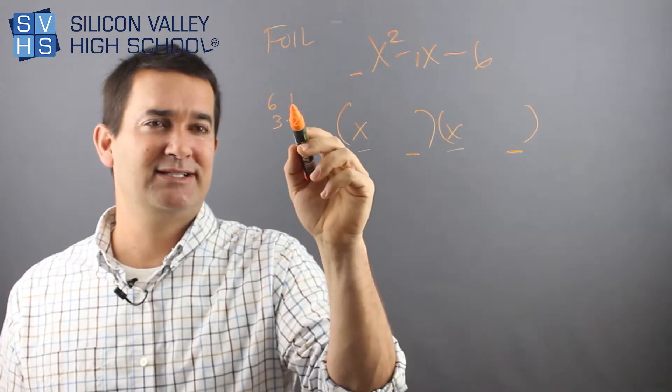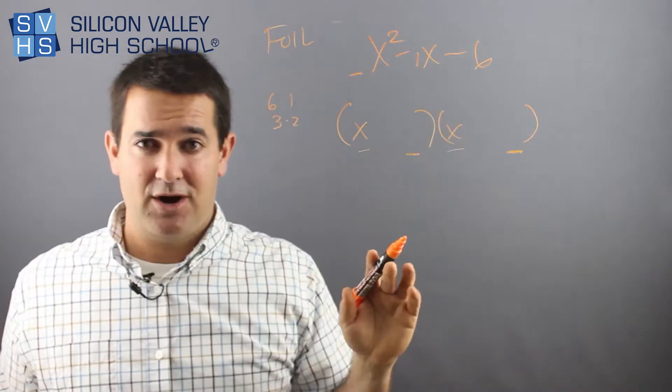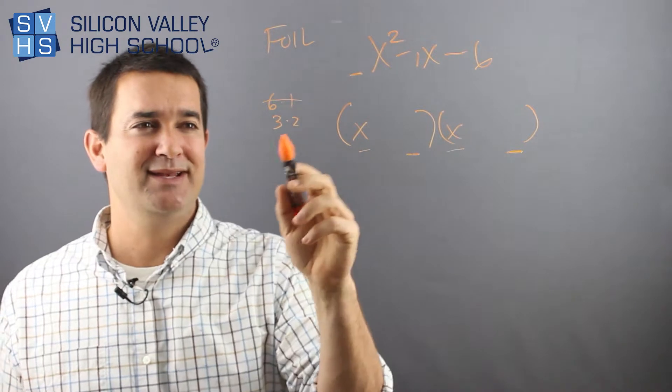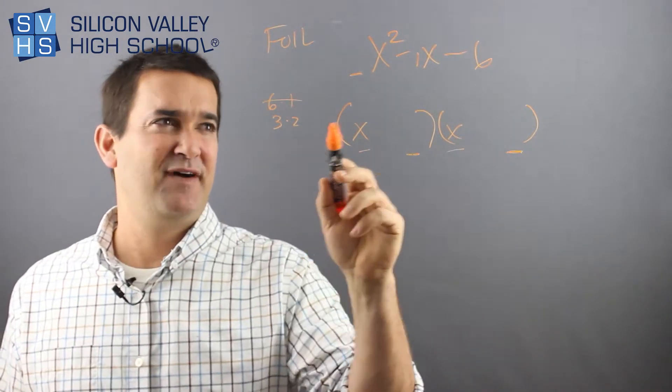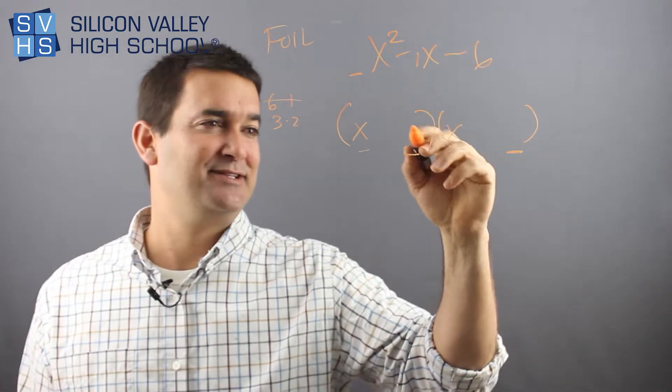Then I use a little logic. Can 6 and 1 ever add or subtract to be 1? Is there any combo where that could happen? Quickly you see not even close. But 3 and 2 - they add to be 5 which is wrong but they subtract to be 1. That looks totally promising. So it's got to be 3 and 2.